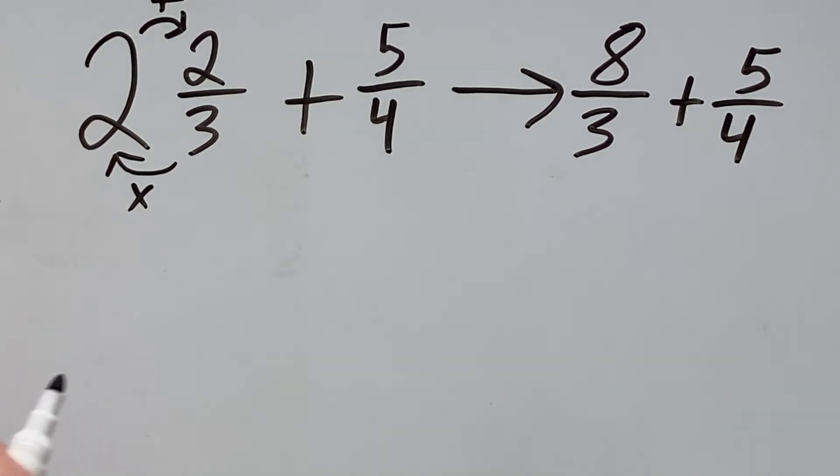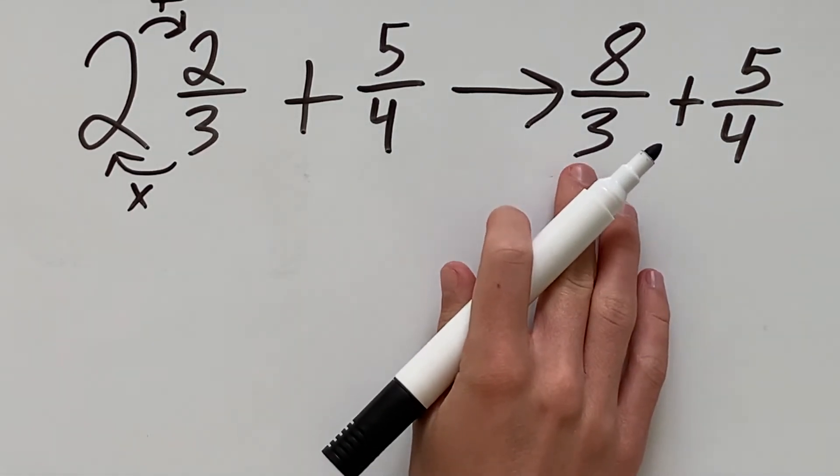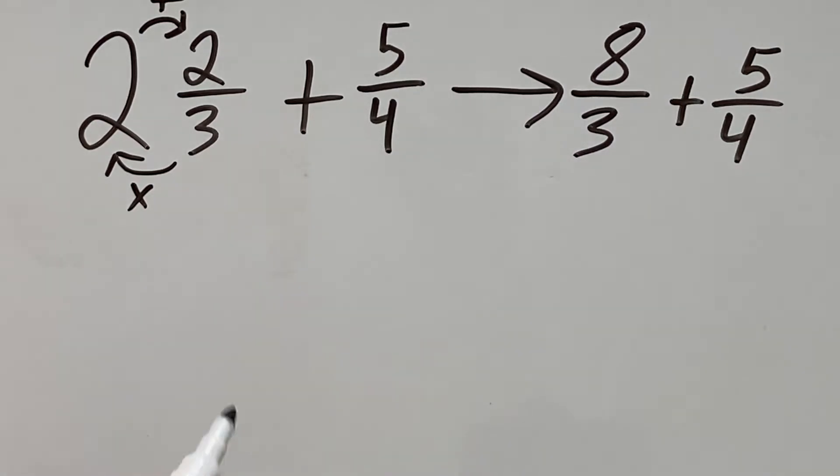Now, we're adding two improper fractions which is an easier problem. Next up though, we have different denominators and we want to get a common denominator. We want to get the least common denominator.